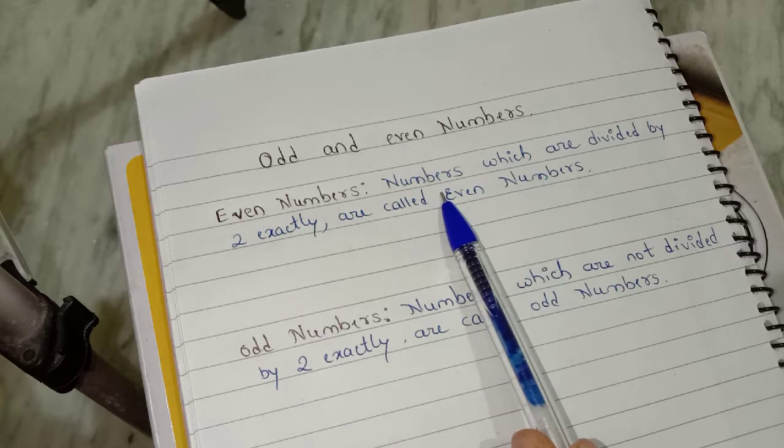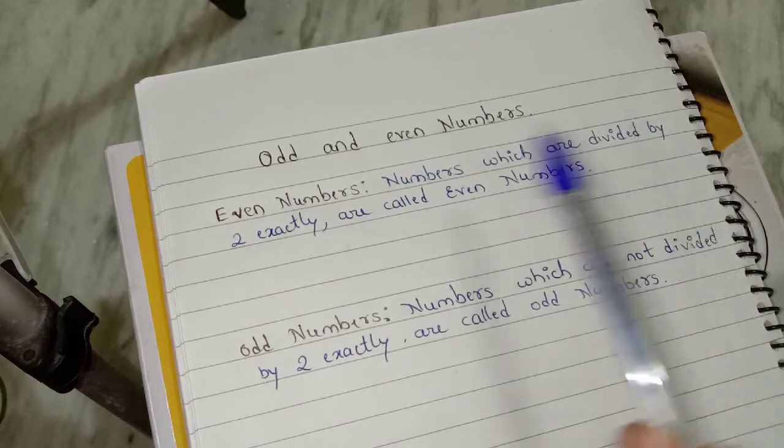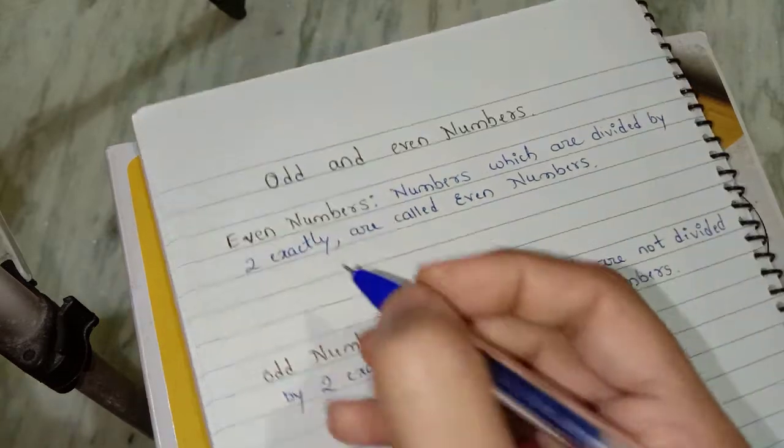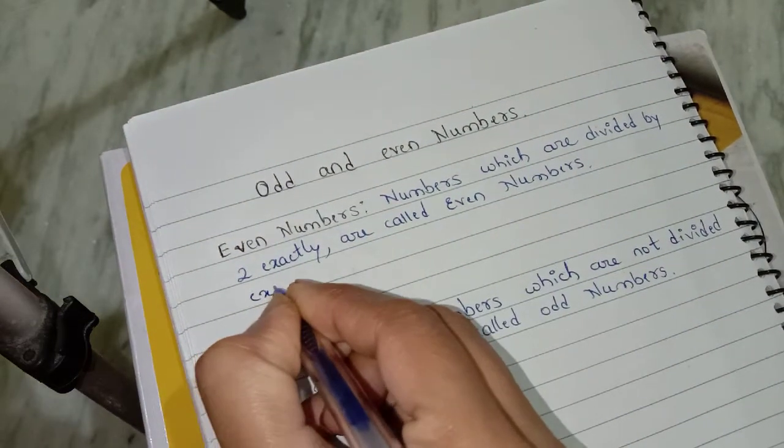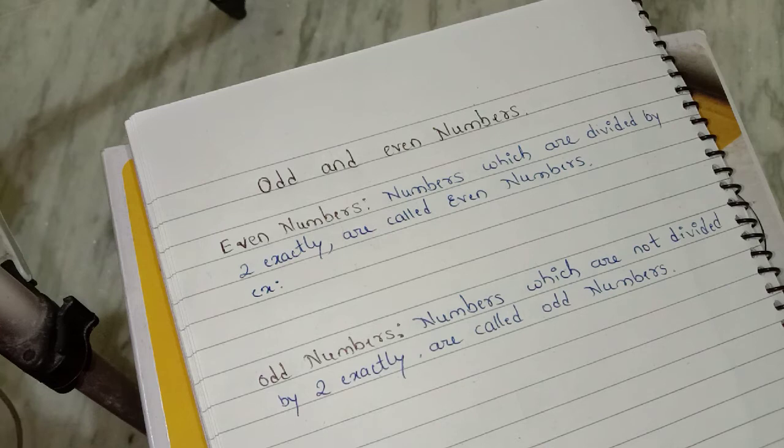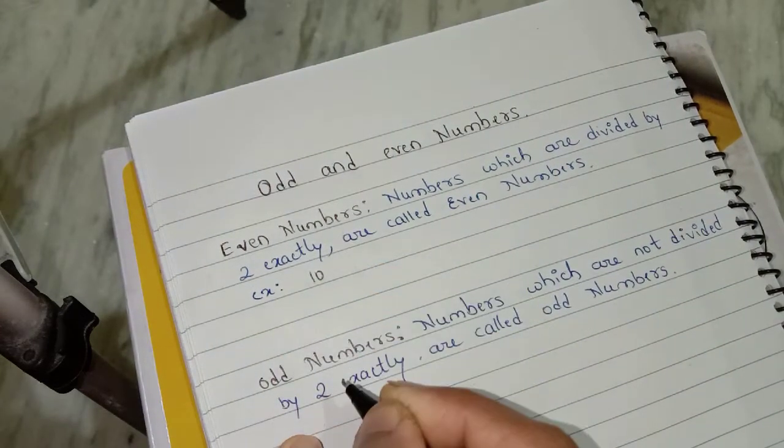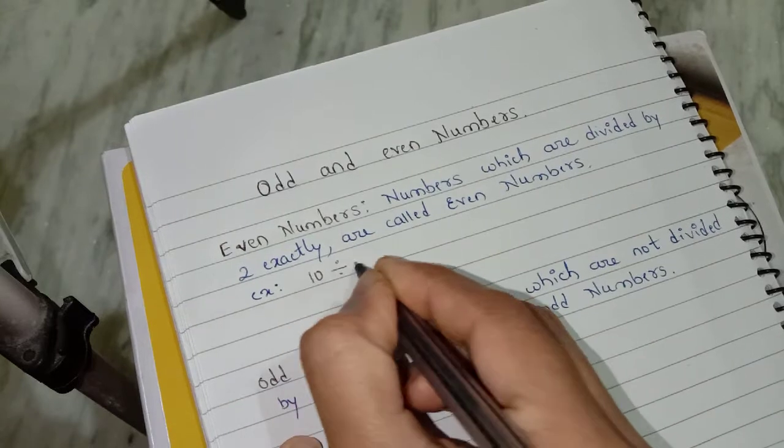So what is even numbers? Numbers which are divided by two exactly are called even numbers. For example, here I will take 10 and I am going to divide it by 2.